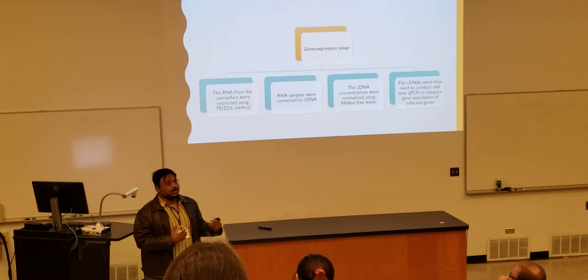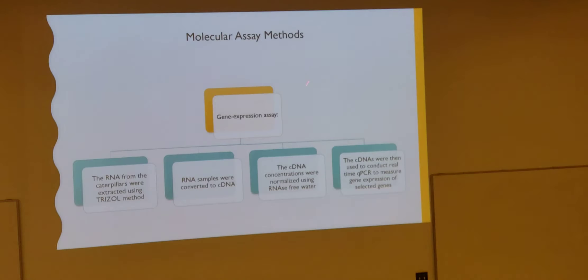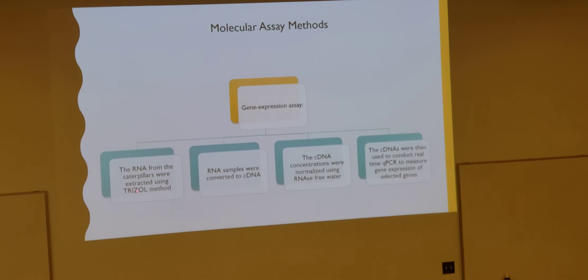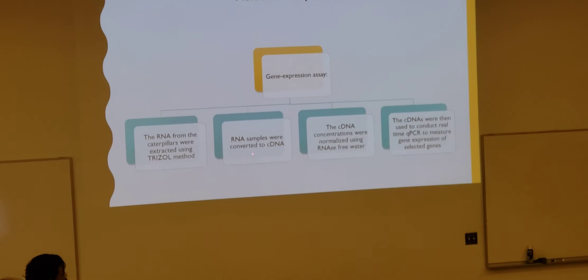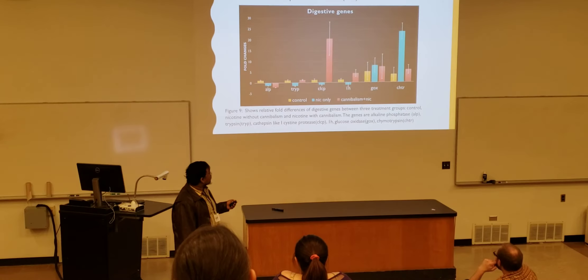However, we still wanted to see at the gene expression level — at the transcriptome level — if we can find some benefits. So this was the method I used to do my gene expression assay. We extracted total RNA from caterpillars that were flash-frozen using TRIzol. The RNA samples were then converted to cDNA. cDNA concentrations were normalized to 300 nanograms per microliter, and those cDNA samples were utilized in qPCR to look at gene expression at a quantitative level.